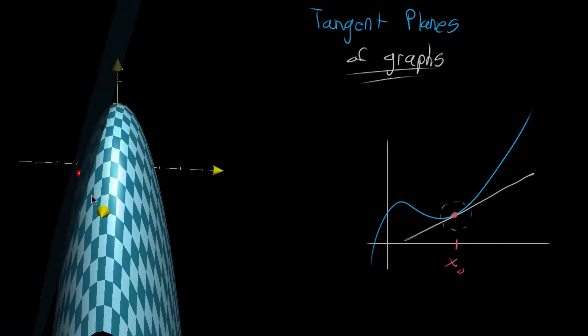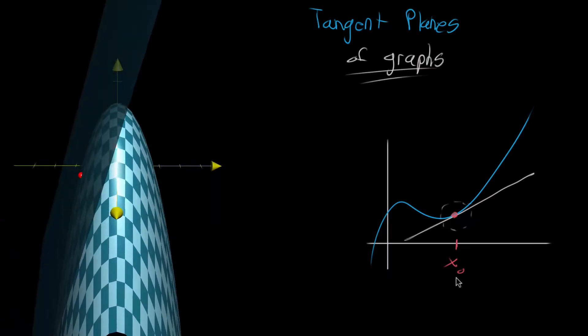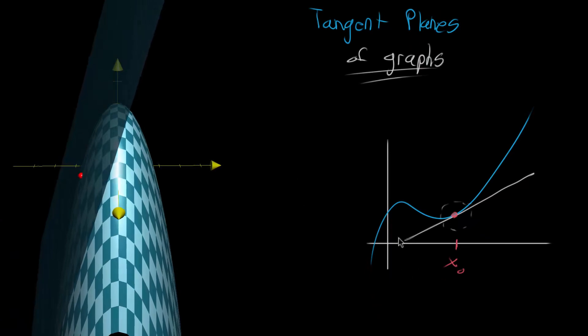And if we think about what this input point corresponds to, it's not x sub 0, a single variable input like we have in the single variable world. But instead that red dot that you're seeing is going to correspond to some kind of input pair, x sub 0 and y sub 0.